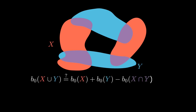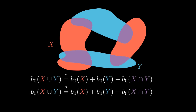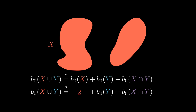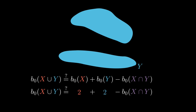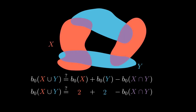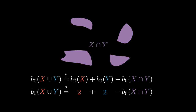Here's the same setup but with different shapes — different blobs. Again, the red blobs I'll call X, the blue blobs Y, and the intersection of X and Y we'll draw in purple. I want to apply inclusion-exclusion to this new situation using that same additivity formula for B₀. Just looking at X by itself, there are two pieces. Just looking at Y by itself, there are also two pieces. And looking at X intersect Y, there are four pieces — the intersection of X and Y has four connected components.